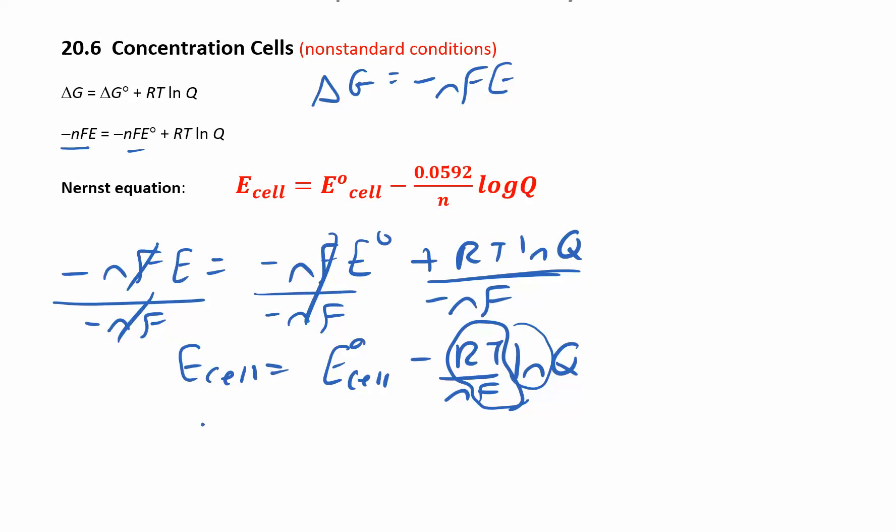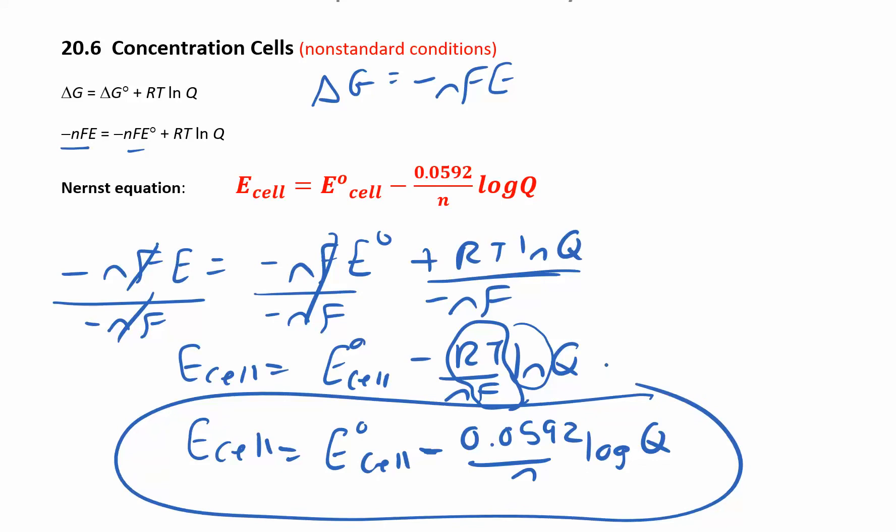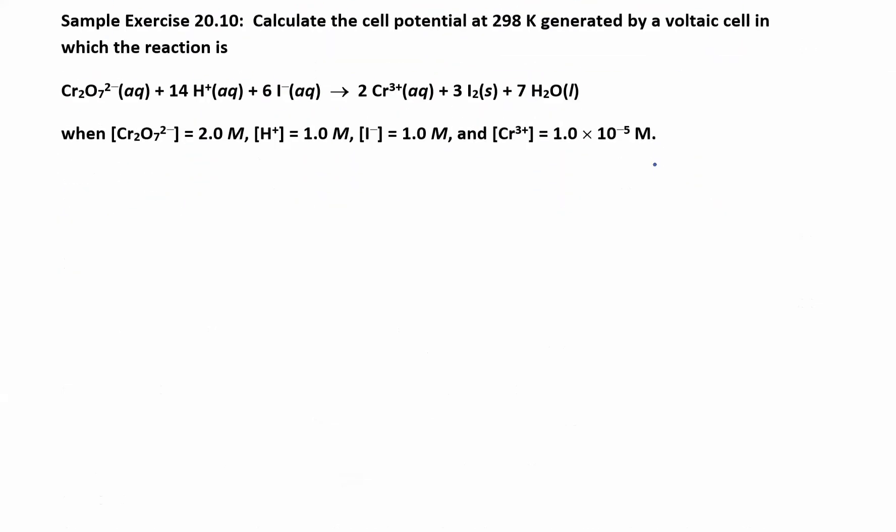If I replace all those with a magic number I get E_cell = E°_cell - 0.0592/n × log Q. So the 0.0592 came from R which is 8.3145, T is 298 and F is 96485. So when you put all that together and then you do the simple conversion from the natural log to the log base 10 you get this magic number of 0.0592. That's the Nernst equation, and we're going to use that whenever we have non-standard conditions. You'll know that you have non-standard conditions when they give you concentrations and they're not one.